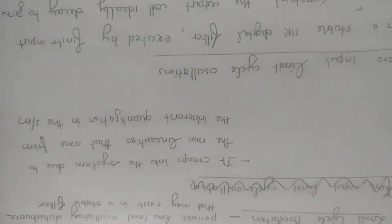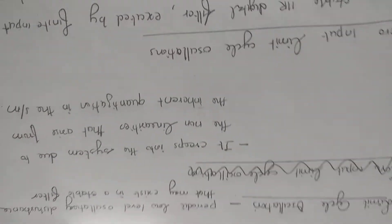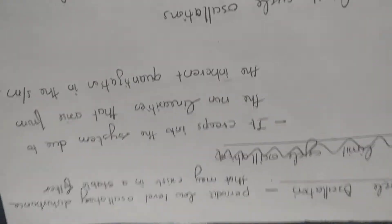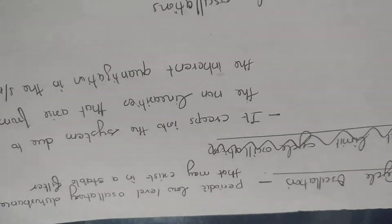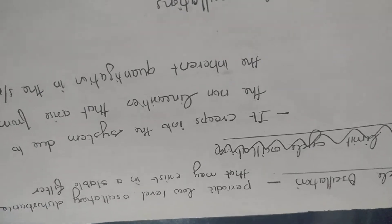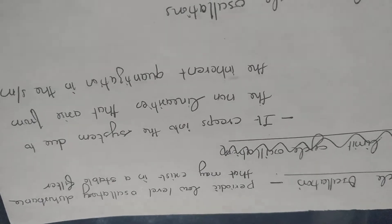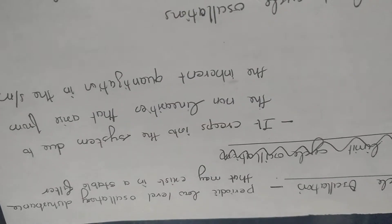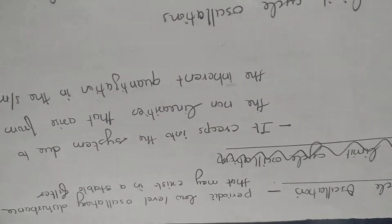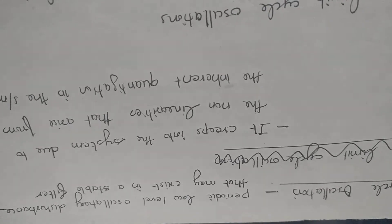What is limit cycle oscillations? In a stable filter, if we do quantization — that means rounding or truncation — a non-linearity is introduced. Non-linearities include saturation and dead zone.